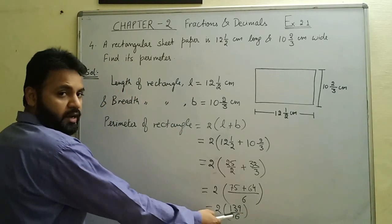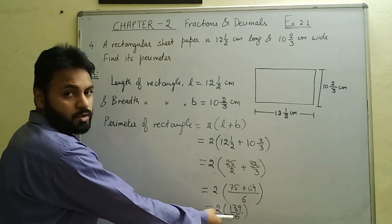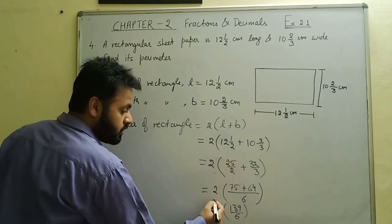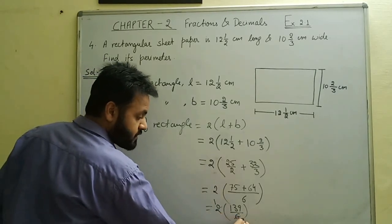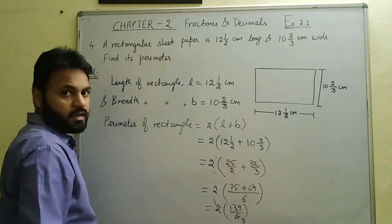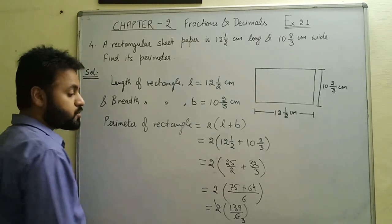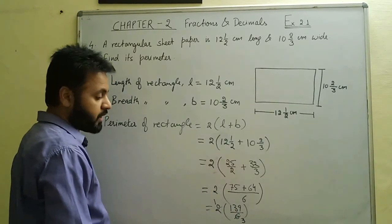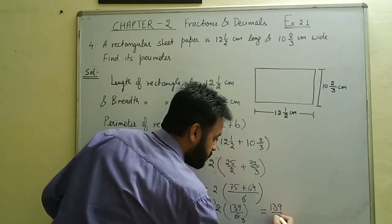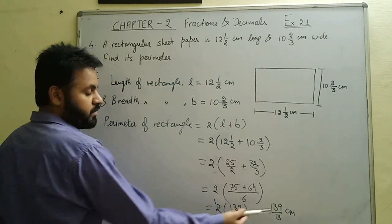When a natural number is multiplied to a fraction, we can either multiply it to the numerator or cancel it with the denominator. Here we cancel the 2 with the denominator 6, giving us 139/3. So the perimeter of the rectangular sheet is 139/3 cm.